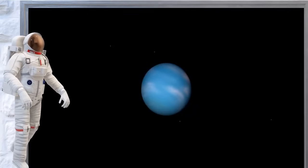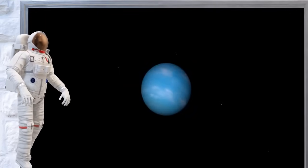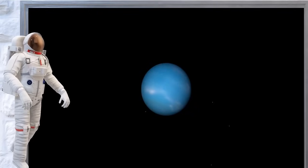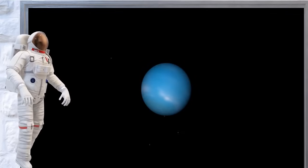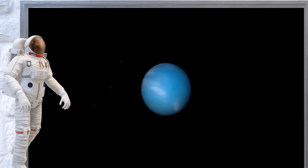Uranus is the seventh planet and is a really chilly place. It's another gas giant and has a light blue color because of the gas in its atmosphere.